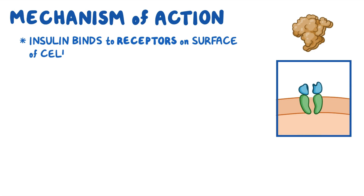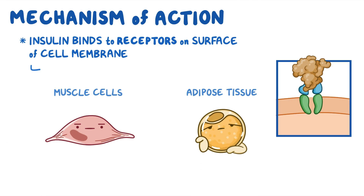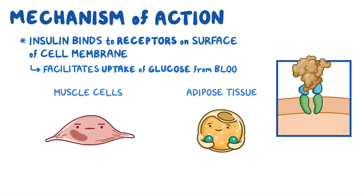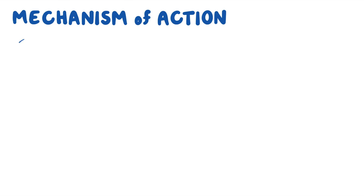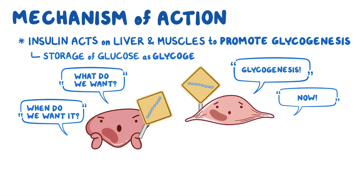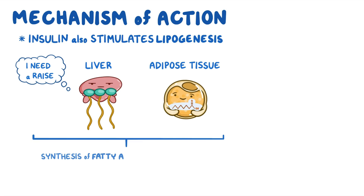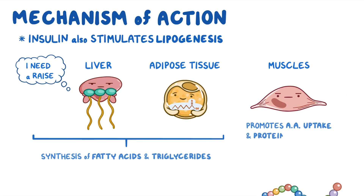Once administered, insulin binds to its receptors on the surface of the cell membrane on insulin-responsive tissues like muscle cells and adipose tissue, and facilitates their uptake of glucose from the blood. Insulin also acts on the liver and muscles to promote glycogenesis — the storage of glucose as glycogen. In the liver and adipose tissue, insulin stimulates lipogenesis, the synthesis of fatty acids and triglycerides, while in muscles it also promotes amino acid uptake and protein synthesis.